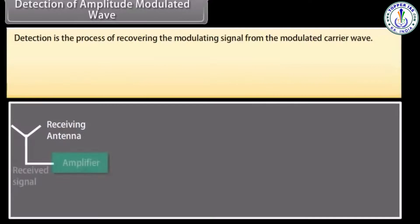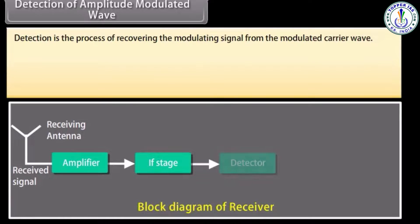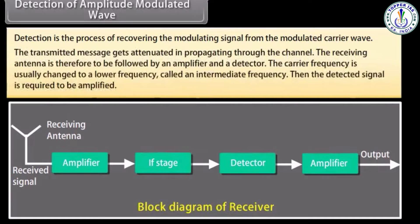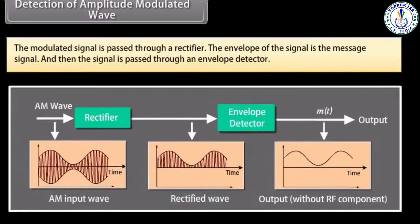Detection of amplitude modulated wave: detection is the process of recovering the modulating signal from the modulated carrier wave. The transmitted message gets attenuated in propagating through the channel, so the receiving antenna is followed by an amplifier and a detector. The carrier frequency is usually changed to a lower intermediate frequency, then the detected signal is amplified. The modulated signal is passed through a rectifier; the envelope of the signal is the message signal, which is then passed through an envelope detector.